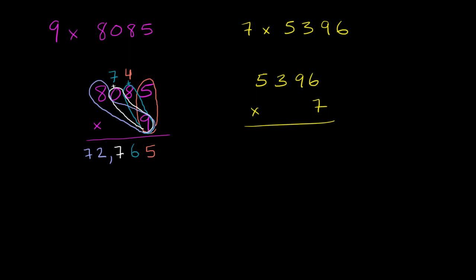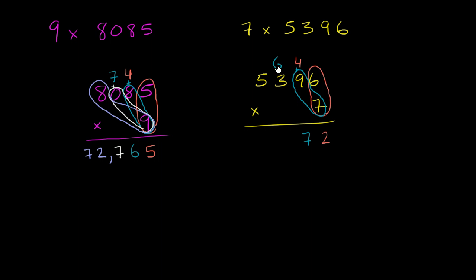First, we think about 7 times 6. We know that's 42 — put the 2 in the ones place, carry the 4. Then we concern ourselves with 7 times 9, and add the 4. 7 times 9 is 63, plus 4 is 67. We put the 7 down here and carry the 6.